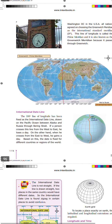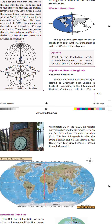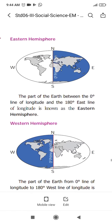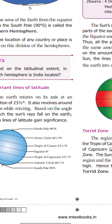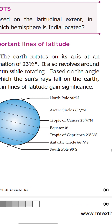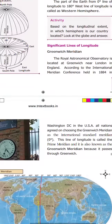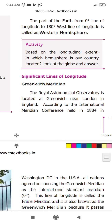Next topic: international date line. Here you have significant lines of longitude. Just as we learned important lines of latitude — equator, tropic of cancer, tropic of capricorn, arctic circle, north pole, south pole — similarly for longitudes there are important lines.